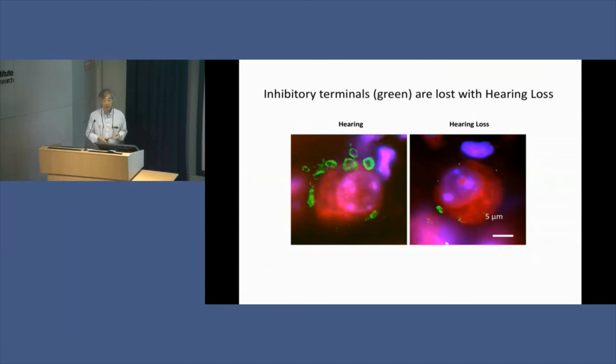With hearing loss, these inhibitory circuits have gone away. What does that mean? It means that this cell has been released from its brakes, so it can be active even in the absence of sound. That's tinnitus—the emergence of phantom sounds, the clanging of our ears, things that aren't there. That's because the brain doesn't like a vacuum and the brakes have been removed.